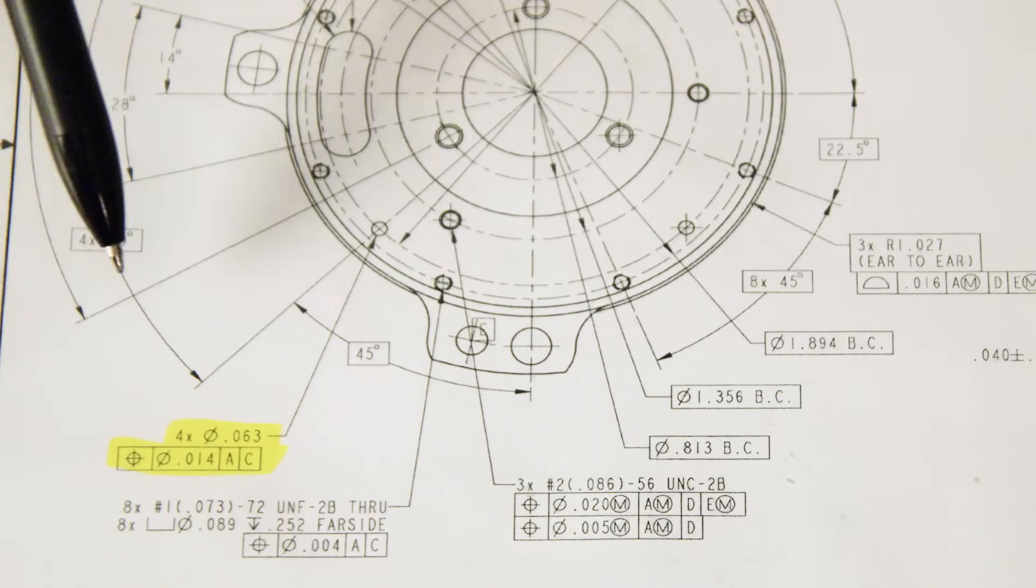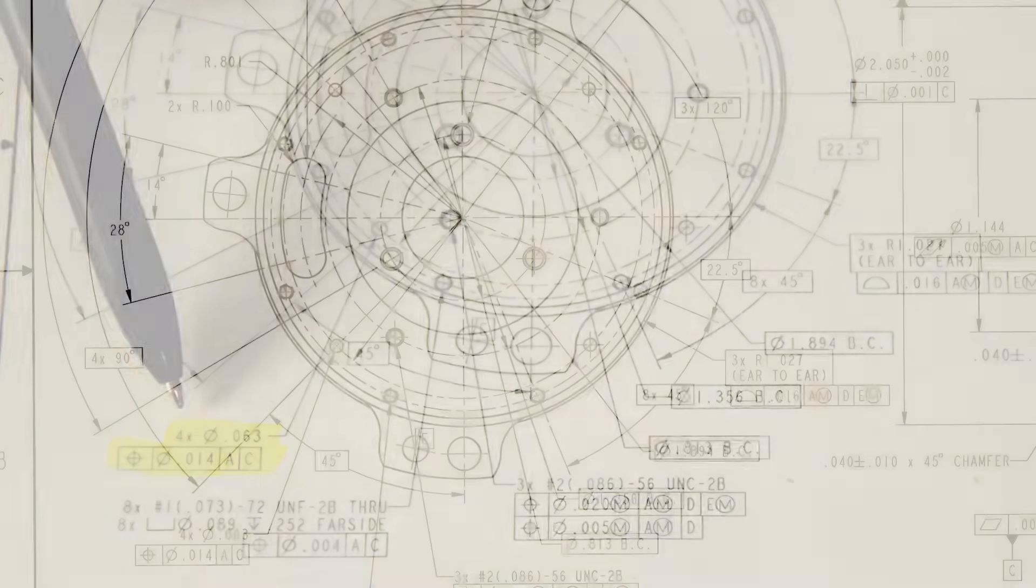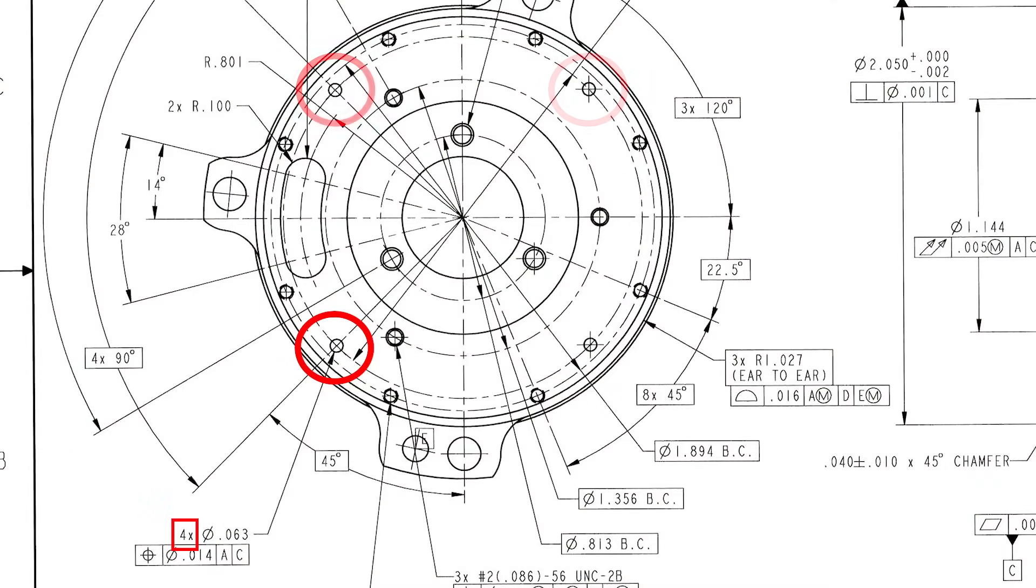Looking at the blueprint, we have four times, meaning four holes, the diameter sign, and we see the size of the hole, which is 0.063. The diameter is 0.063, and 0.014 is the tolerance.